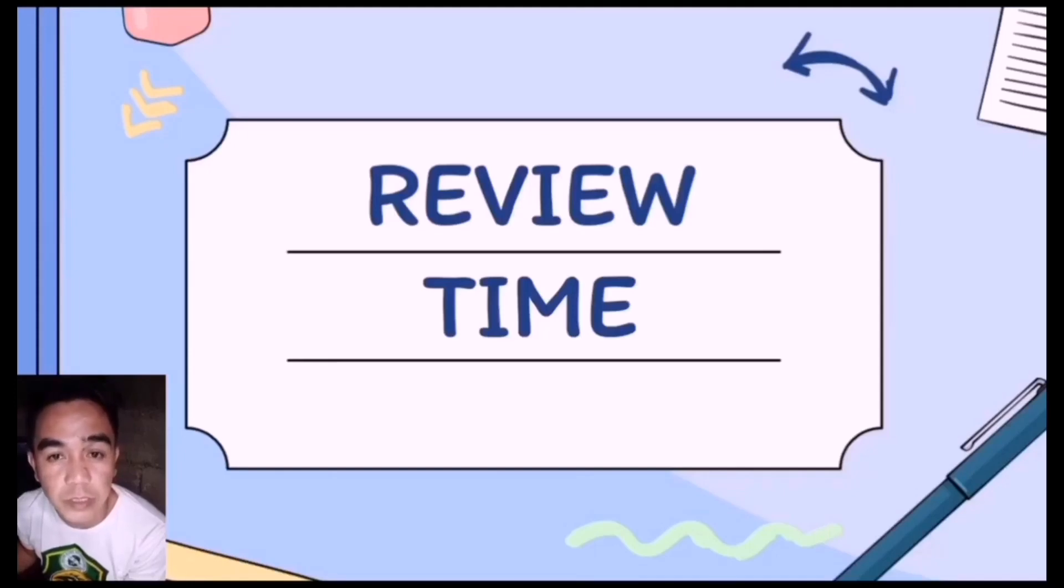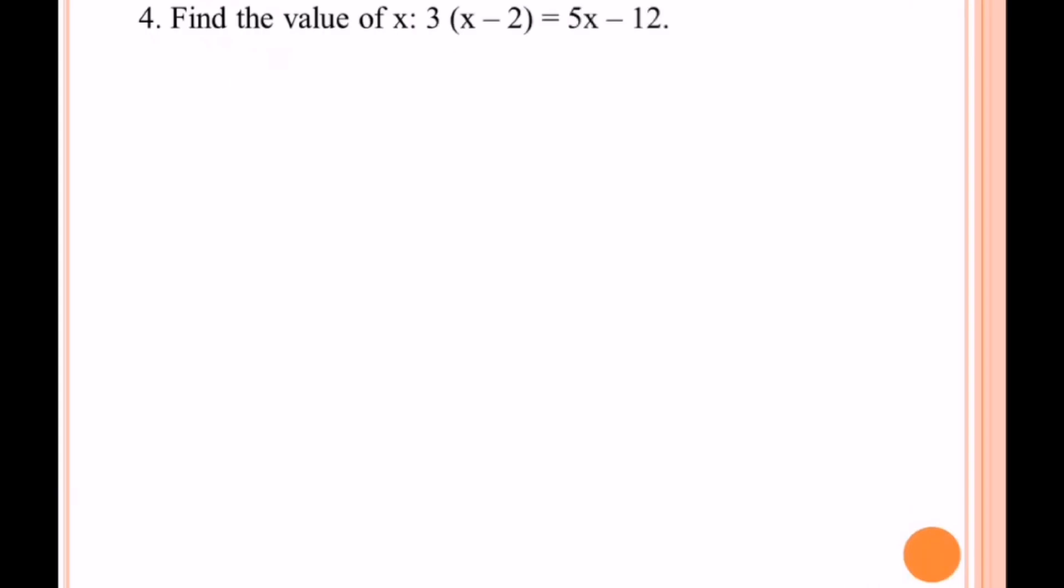It's review time, problems 4 and 5. Algebraic problem number 4: find the value of x. 3 times (x minus 2) equals 5x minus 12. Let us have solution and reason. First, bring down the given.